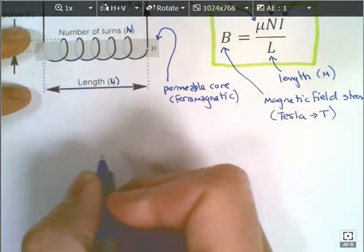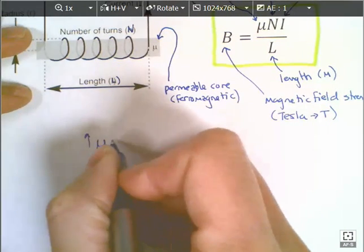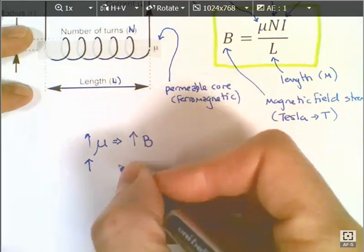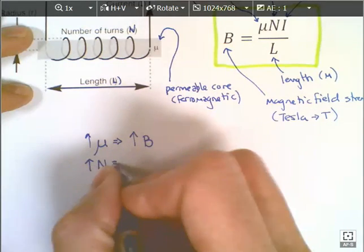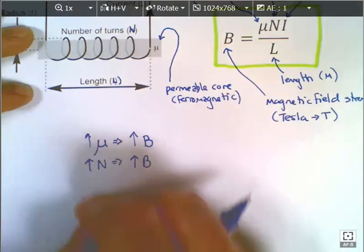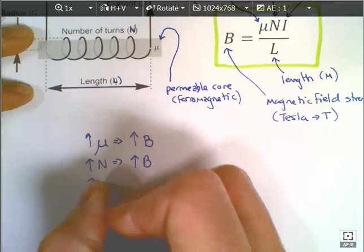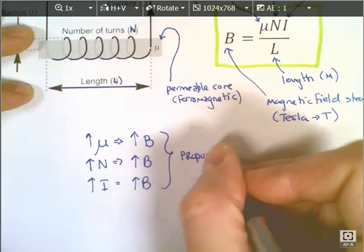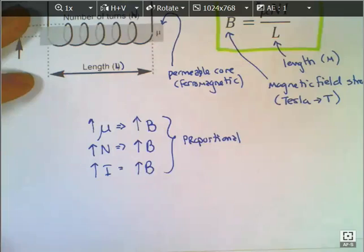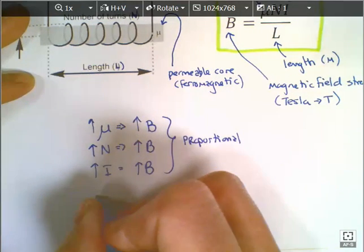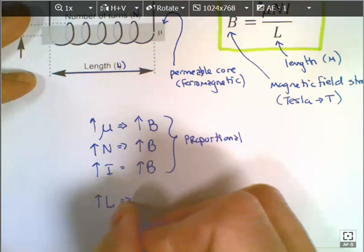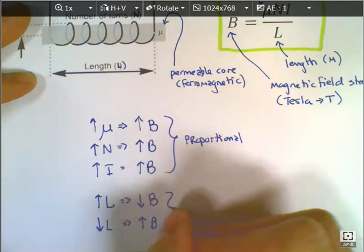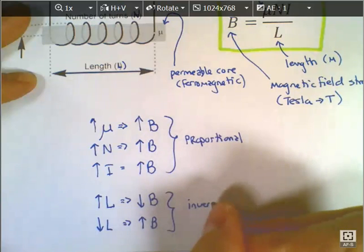To show this: if we increase mu, we increase effectively the magnetic field. Conversely, if we decrease mu, we decrease the magnetic field. If we increase N, we get an increase in the magnetic field; if we decrease N, we get a decrease. If we increase the current flow, we increase the magnetic field. These are all proportional — they have a proportional effect on the strength. The one that's different is L: if we increase L, we decrease the magnetic field, whereas if we decrease L, we increase the magnetic field. This is inversely proportional.